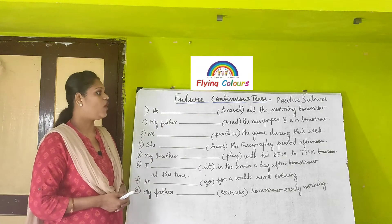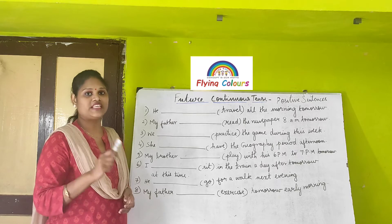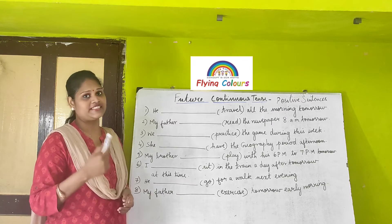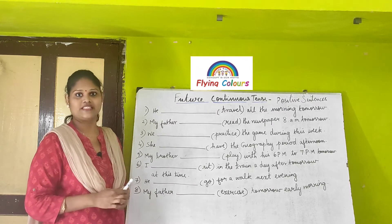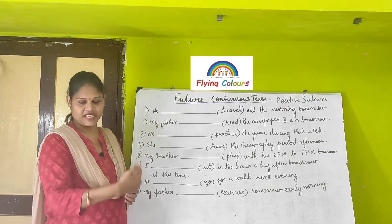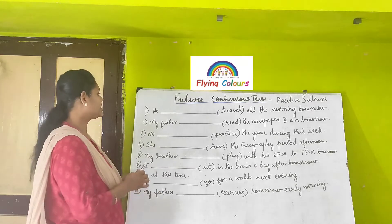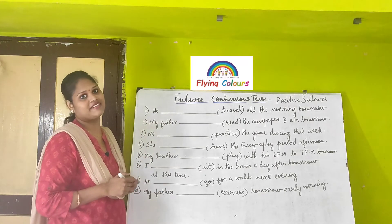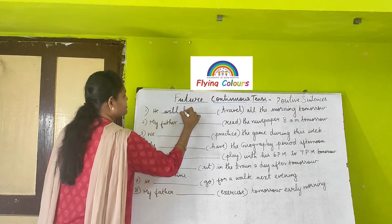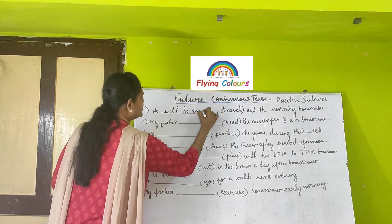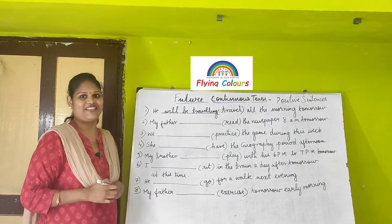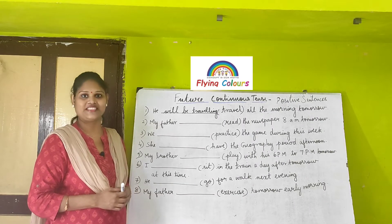Example sentence: 'He ___ travel all the morning tomorrow.' The clue is 'all the morning tomorrow,' which tells us to use future continuous tense. The subject is 'he,' and the main verb is 'travel.' Applying the formula — subject plus will plus be plus present participle — we get: 'He will be traveling.' T-R-A-V-E-L-L-I-N-G is the present participle for travel.